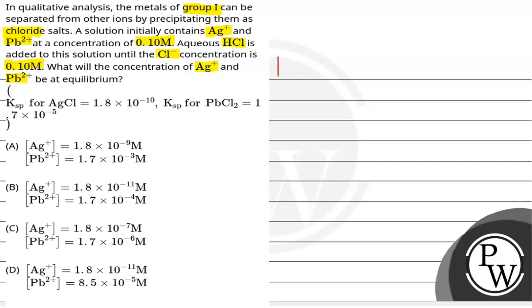First, the key concept for this question is solubility product. Solubility product is shown as Ksp. This is basically about ions that dissociate - it is a multiplication.